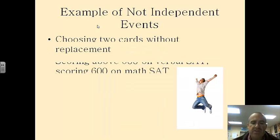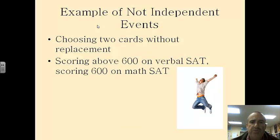Examples of events that are not independent. For example, choosing two cards without replacement. Scoring above a 600 on the verbal SAT versus scoring a 600 on the math SAT. Those things are not independent. Because if you score above a 600 on the verbal, you're probably a pretty smart person. You're more likely to have scored above a 600 on the math as well.